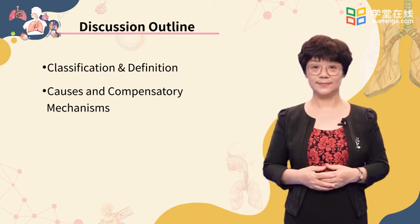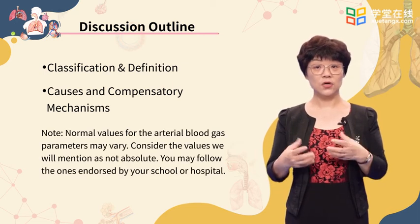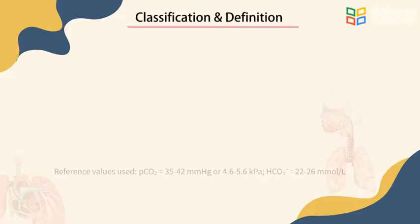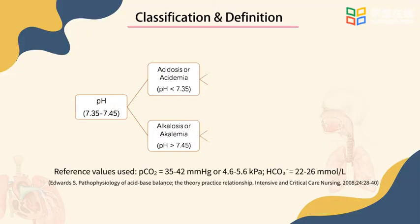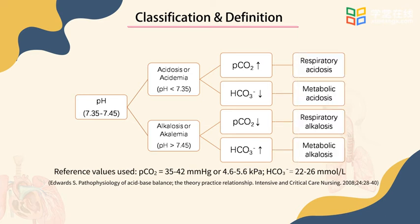Please note that the normal values for the arterial blood gas parameters may vary slightly. The values we will mention are not fixed — you can follow the ones endorsed by your school or hospital. Using pH as the primary indicator, we would have acidosis if the pH is below 7.35, or alkalosis if the pH is above 7.45. Both acidosis and alkalosis would further be classified as respiratory or metabolic.